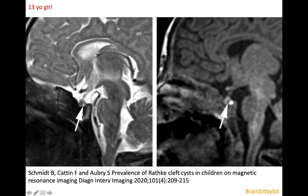These are sagittal T2-weighted images of a 13-year-old girl, where you can see a Rathke's cleft cyst located between the anterior and posterior pituitary, with low signal on the T1-weighted images.